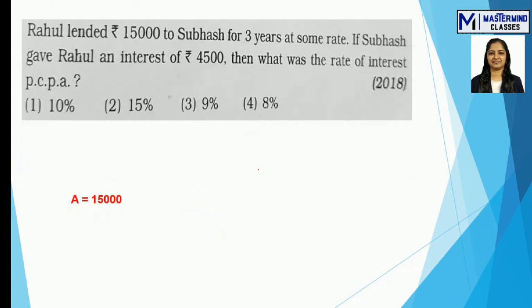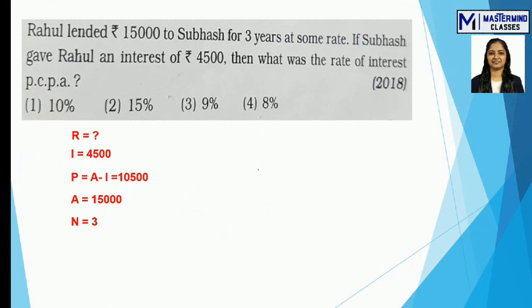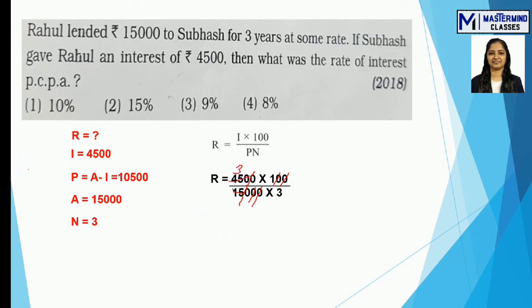Next example: amount = 15000, N = 3 years, interest = 4500. Find the rate of interest. First find P = A − I = 15000 − 4500 = 10500. Using R = (I × 100) / PN, substitute and reduce the zeros (three zeros cancel from numerator and denominator). Using the 15-times table: 15×3=45, and further reduction gives R = 10%. That is option number 1.